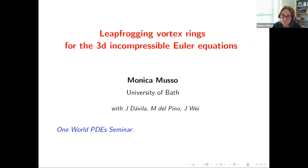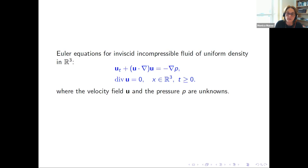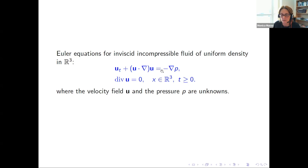This is about the construction of leapfrogging vortex rings for the Euler equation for incompressible fluids. Let me recall the Euler equations in R3. This is a set of equations that describes the evolution in time of the velocity U of the fluid. The fluid has uniform density and there is no viscosity, so the acceleration on the left-hand side is equal to the sum of the density of force represented by the gradient of p. The fluid is assumed to be incompressible, so the divergence of U equals zero.